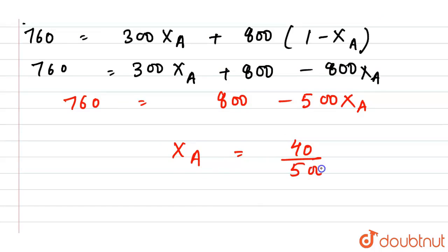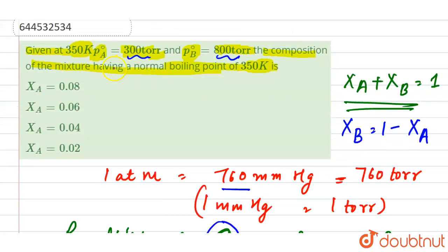That is our required answer - the X_A value is 0.08. We can also find the X_B value from here, but the question asks only for X_A, so 0.08 is our answer.